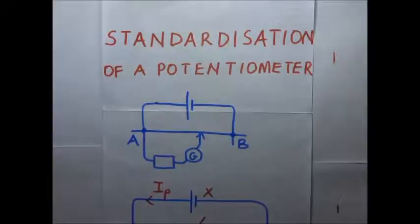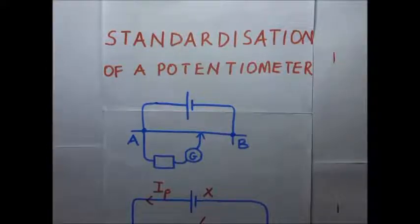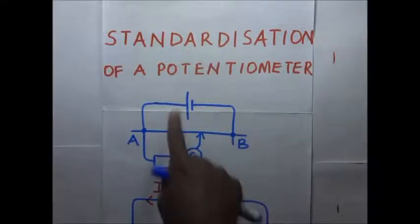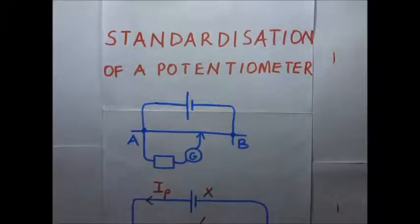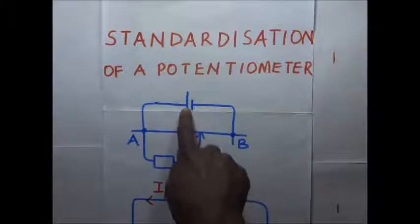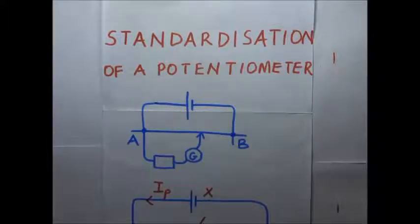A slide wire in a potentiometer has a uniform cross-sectional area and therefore it definitely has a uniform resistance along its length. We can control the voltage drop along the slide wire by adjusting the amount of driver current. The process of adjusting the driver current so that it matches the voltage drop across a certain portion of the sliding wire against a standard or known reference source is what we call standardization of a potentiometer.